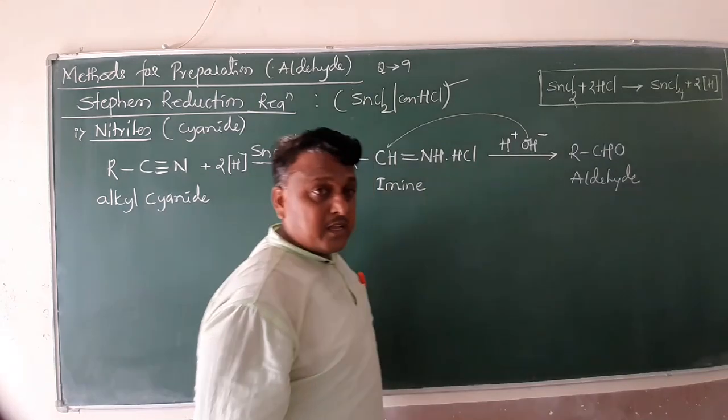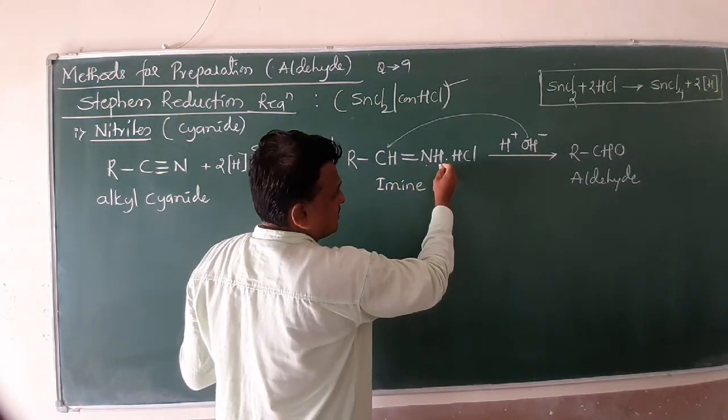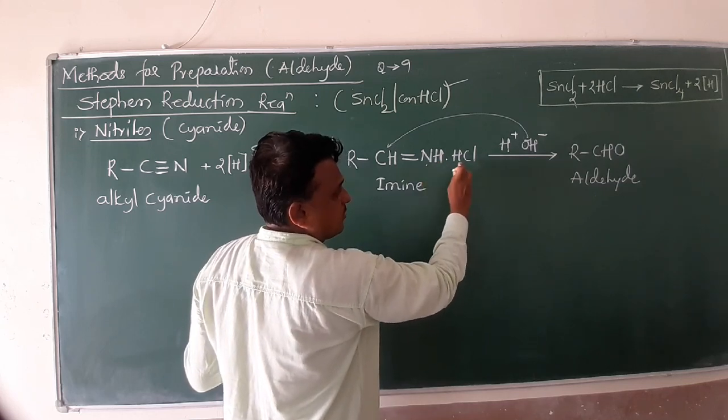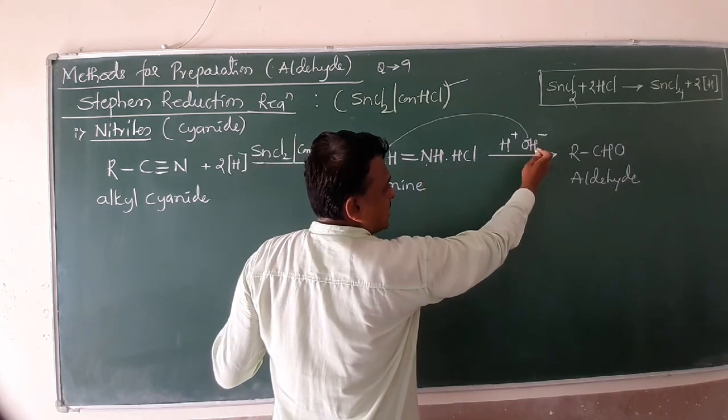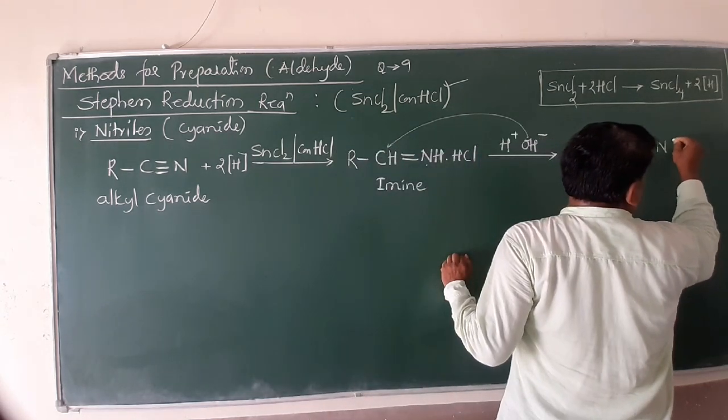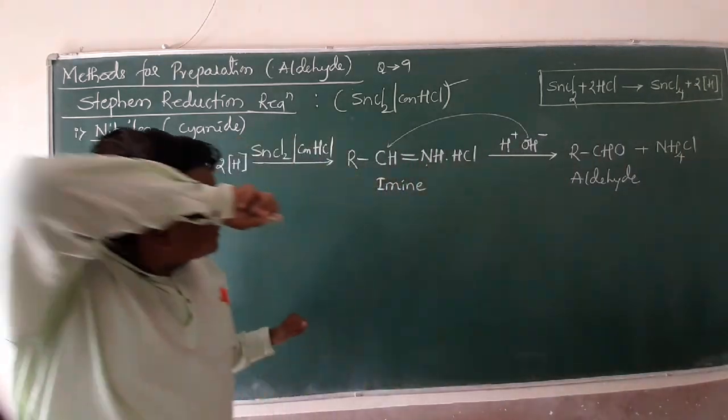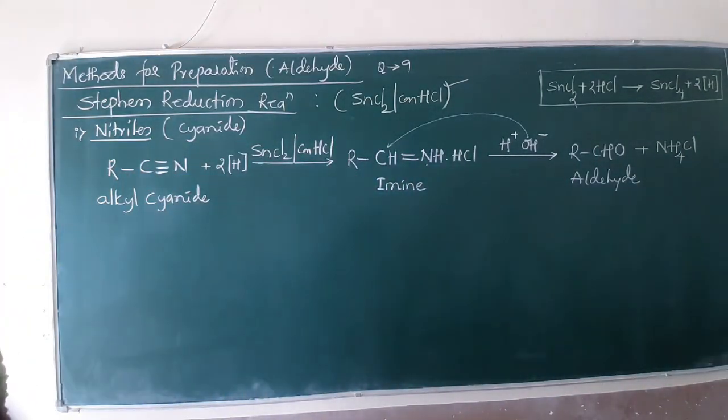What remains? This is very important. It remains one nitrogen, one hydrogen, second hydrogen, third and fourth hydrogen with HCl. Means one nitrogen, four hydrogen with HCl to form a salt, ammonium chloride. Start carefully. An alkyl cyanide undergoes reduction with tin chloride in concentrated HCl to form the product imine, which undergoes acid hydrolysis to form our target aldehyde.